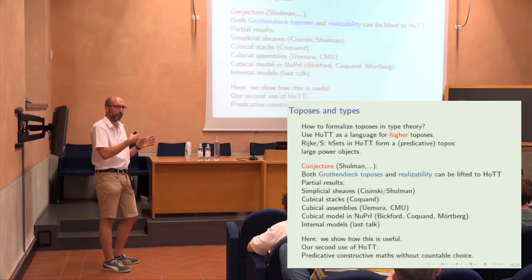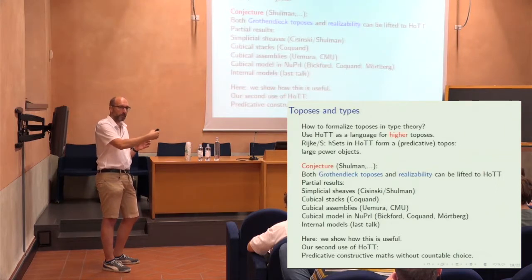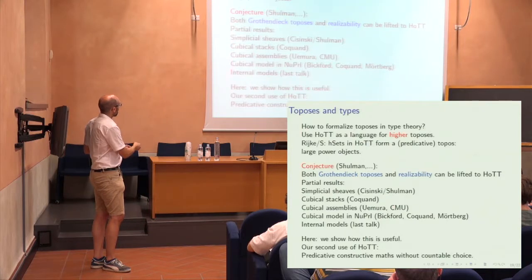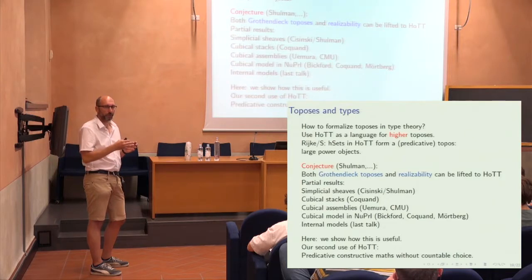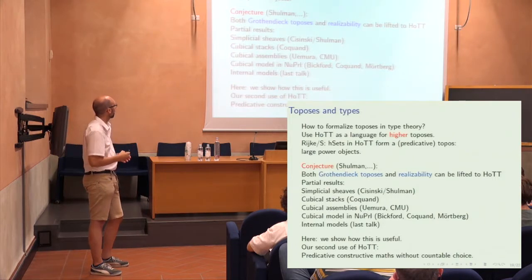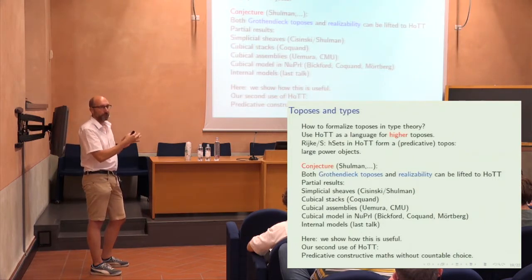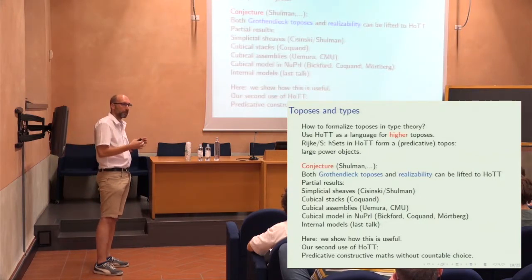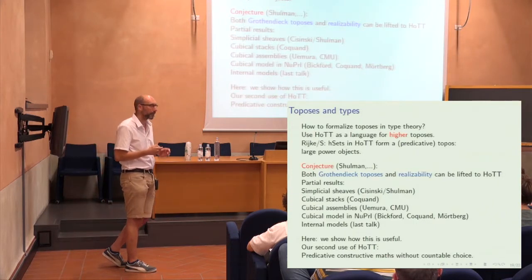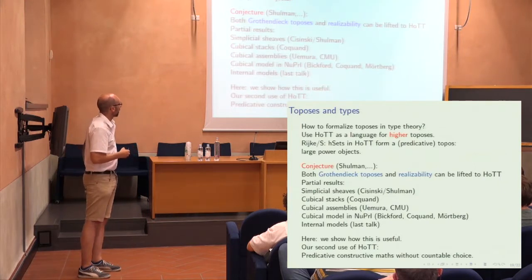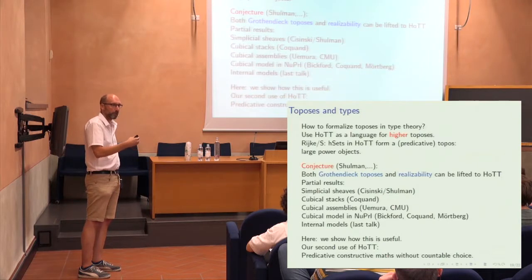You start with a standard Grothendieck topos, use it as your ambient category to do the internal construction, and get something that at least looks very much like a higher topos. There's quite a bit of work in this direction but also quite a bit to be worked out. This is an exciting project to build the infinity elephant — a book much like the Elephant that contains all the semantics of homotopy type theory and all the higher topos theory in one. This gives evidence that such a theory would actually be useful: if we have a type theory with good semantical models in realizability toposes and Grothendieck toposes, we can have interesting applications.